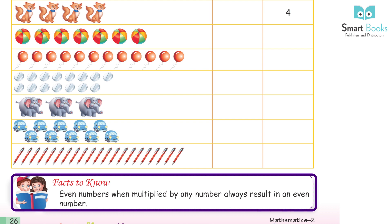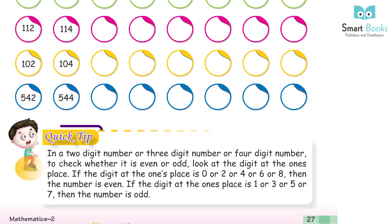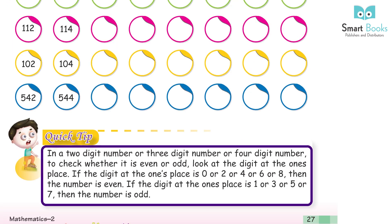Quick tip: in a two-digit, three-digit, or four-digit number, to check whether it is even or odd, look at the digit at the ones place. If the digit at the ones place is zero, two, four, six, or eight, then the number is even.